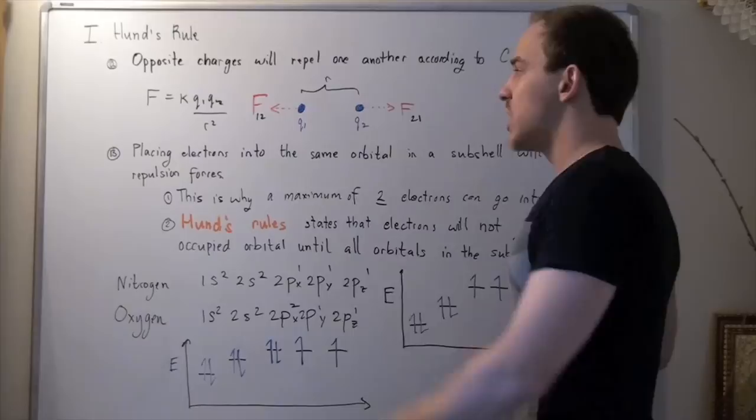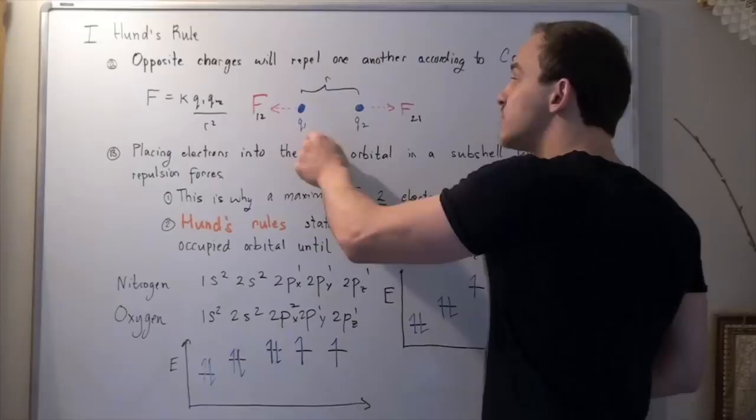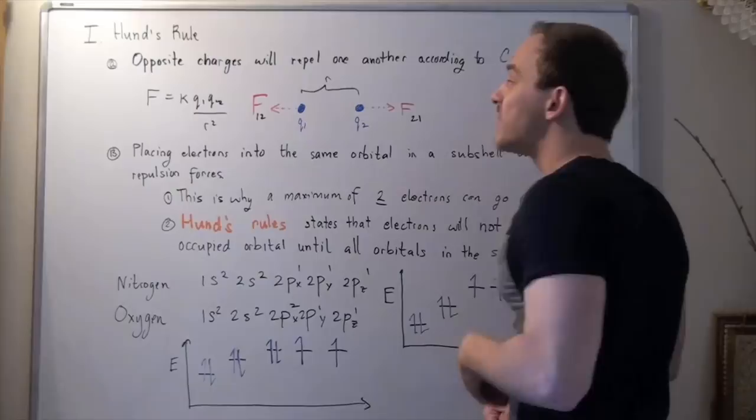So, if I take two electrons, Q1 and Q2, a distance R apart, this electron, this charge Q2, will feel a force due to this charge Q1, the same charge, and this force will be in this direction, and this force is given by this law.